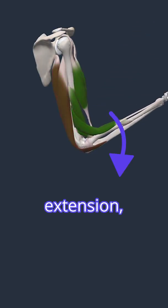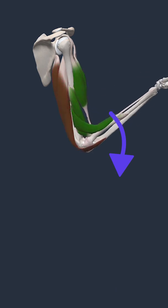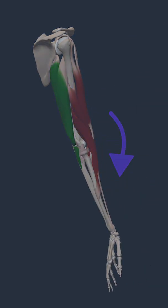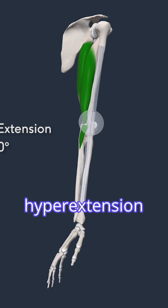Moving on to elbow extension, the action of straightening out your elbow. Here we can see it overlaid with a goniometer, showing a normal extension range of 0 degrees. It's common and normal to see a few degrees of hyperextension as well.